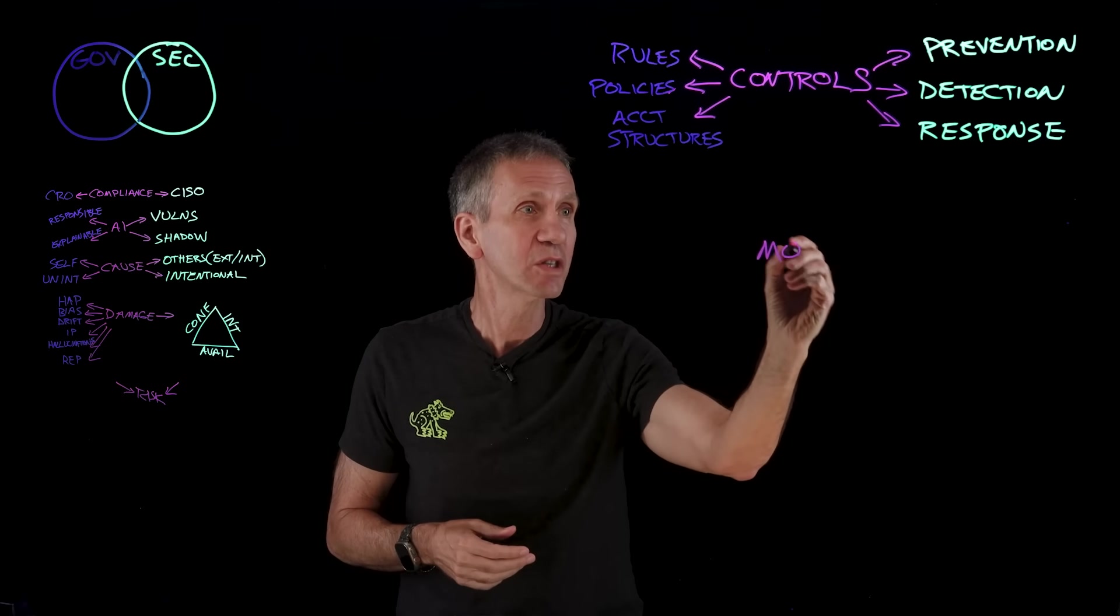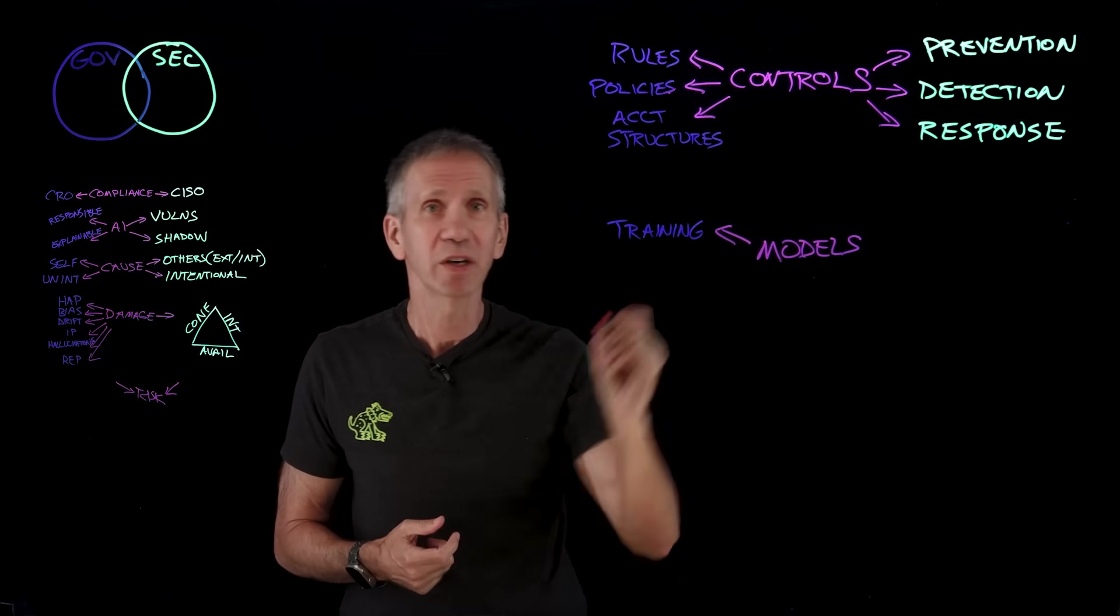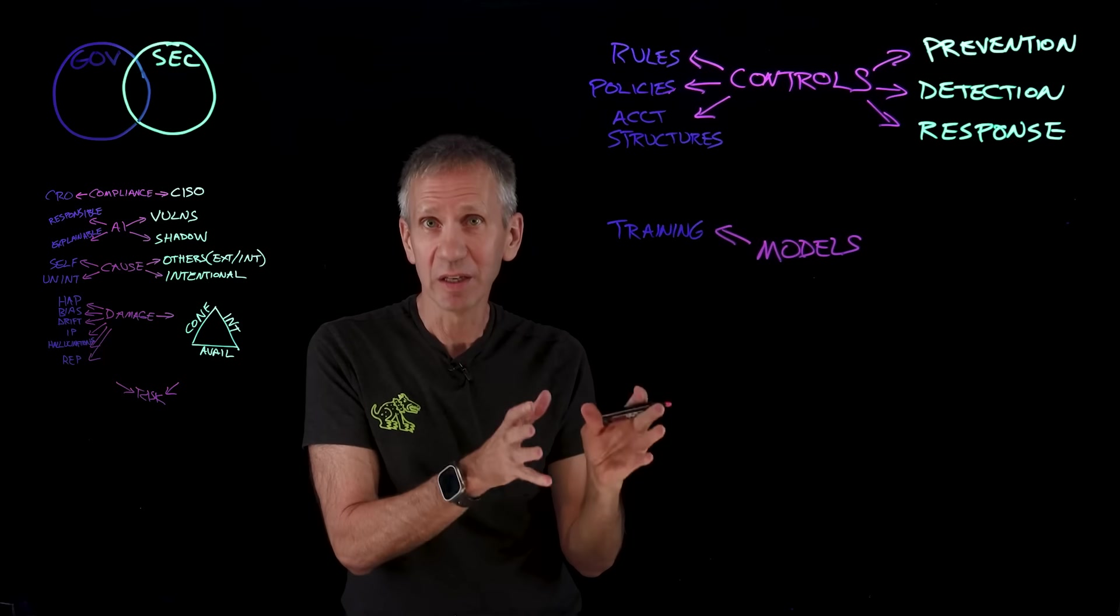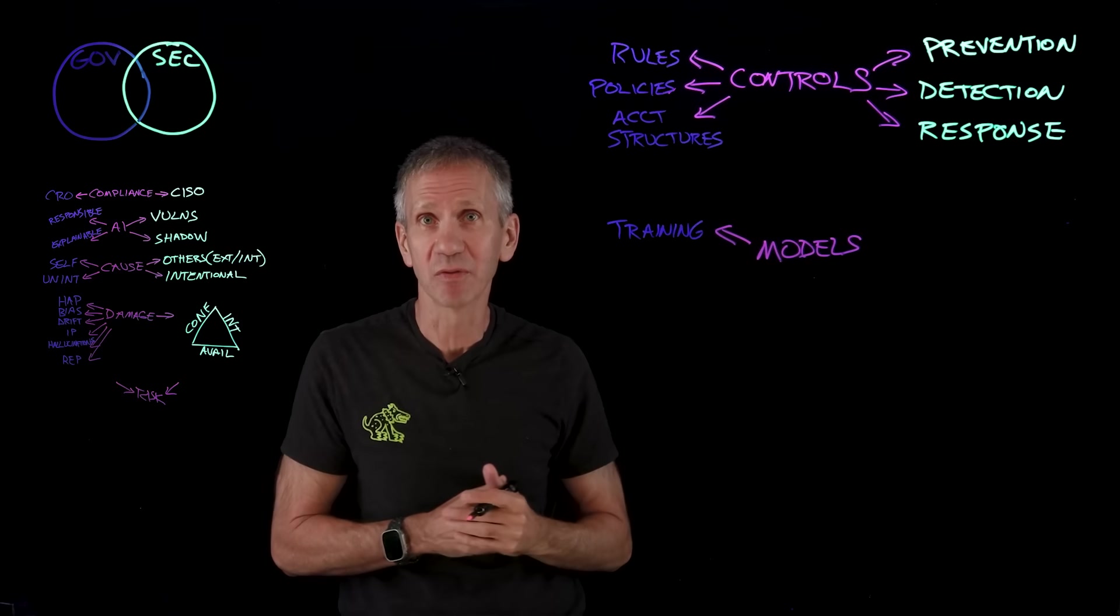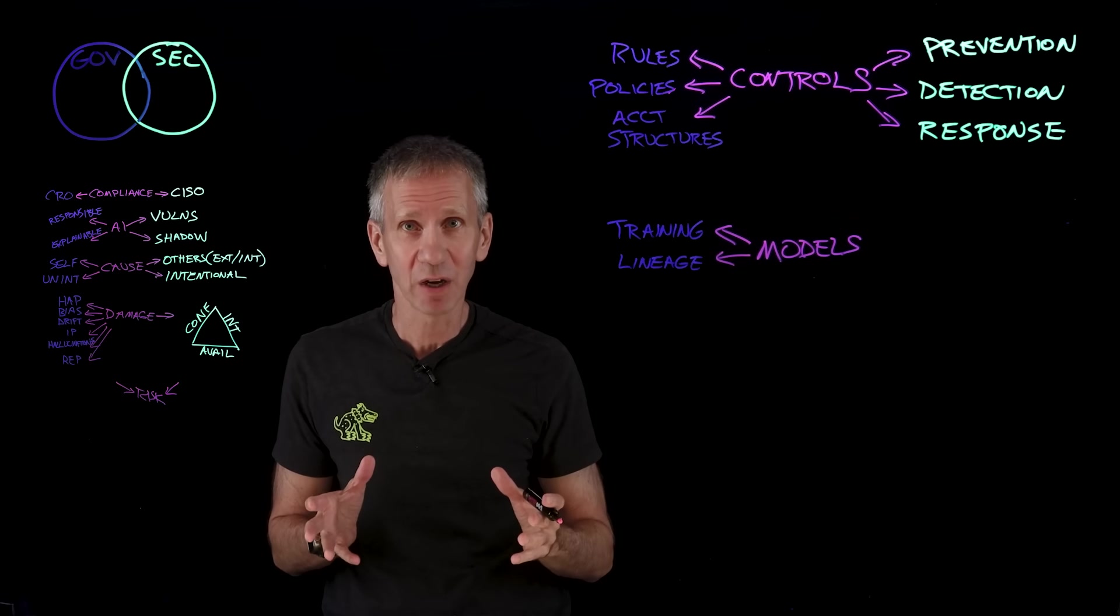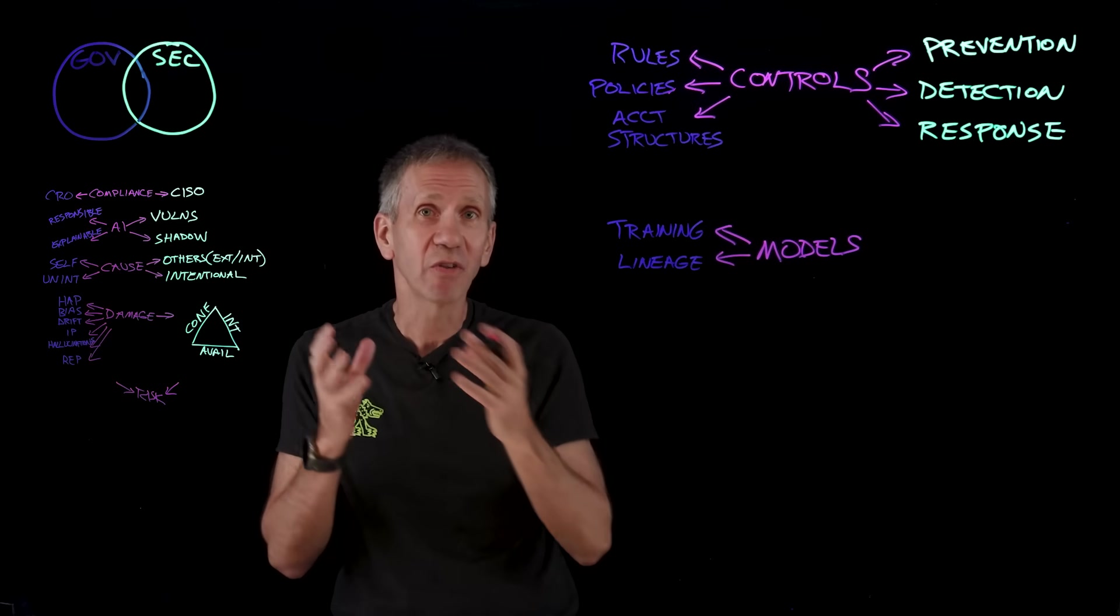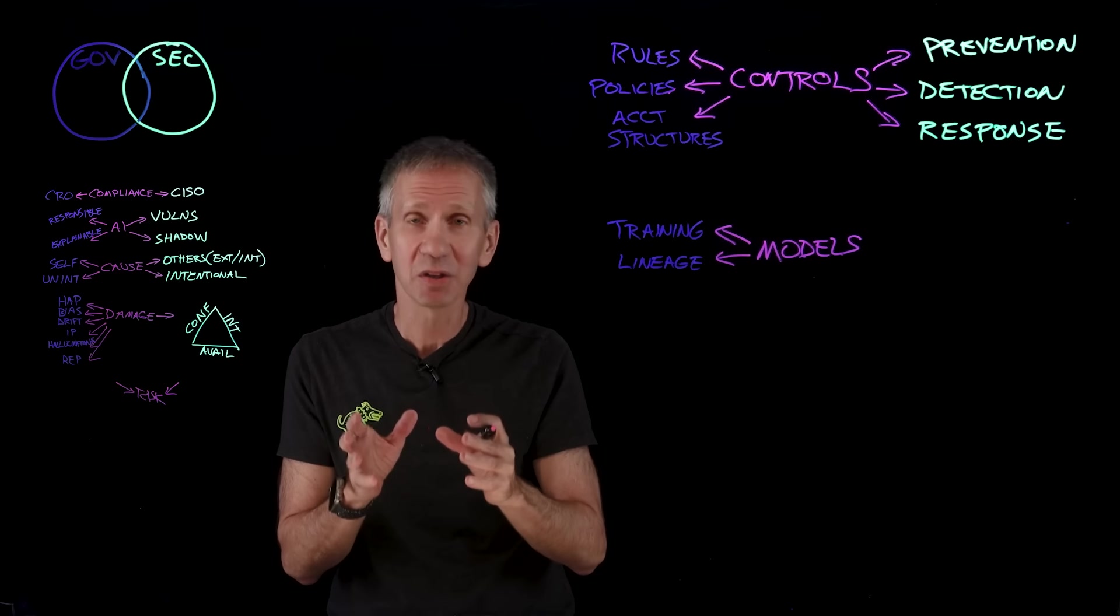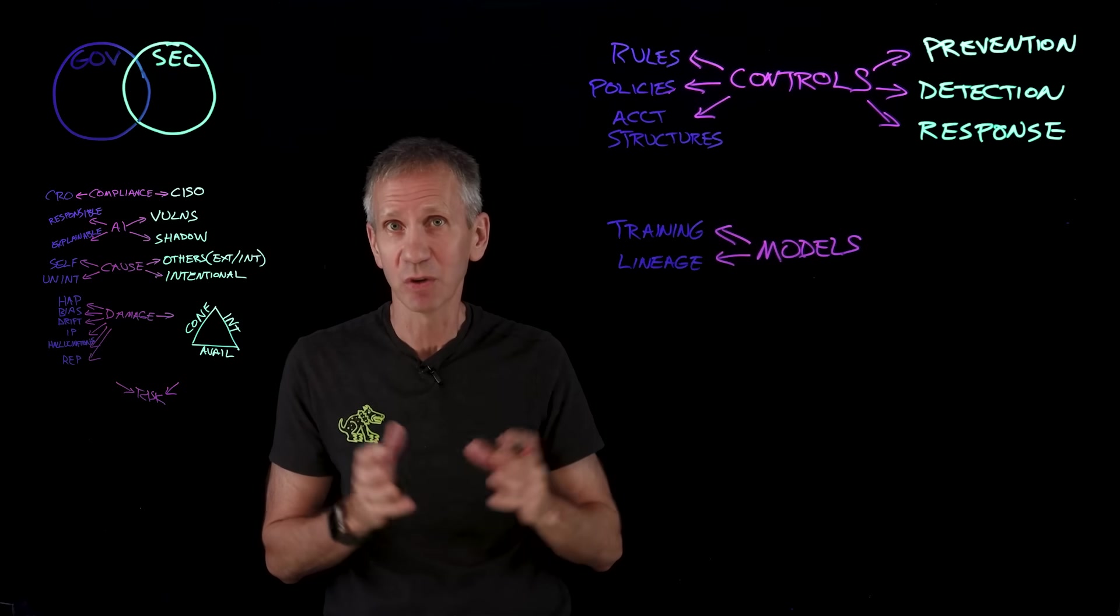With our models, what specifically do we need to do from a governance standpoint? We want to make sure that they're trained properly. We need to know what the sources are so that that information is what we intend it to be. If you use bad sources, you get bad data and bad responses out of your AI. We need to know the lineage of the model.